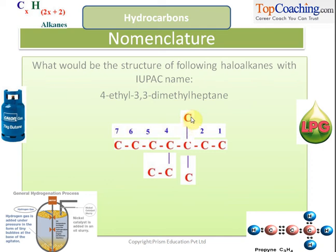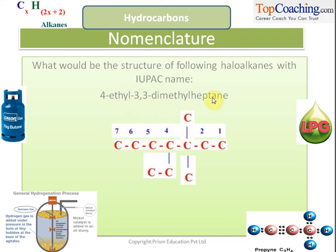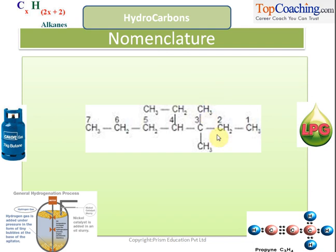Now put in the required number of hydrogens to satisfy the valency of carbon — carbon can form four bonds. For example, this carbon will have no hydrogens attached, this carbon will have three hydrogens because it has one bond with carbon and three more with hydrogens, and this carbon will have two hydrogens as CH₂, and so on. This is how 4-ethyl-3,3-dimethylheptane looks.